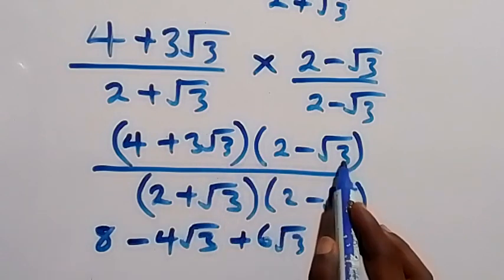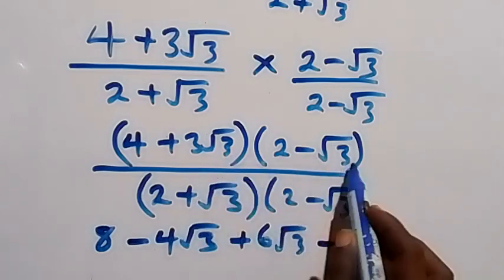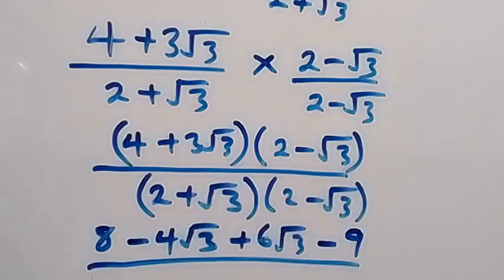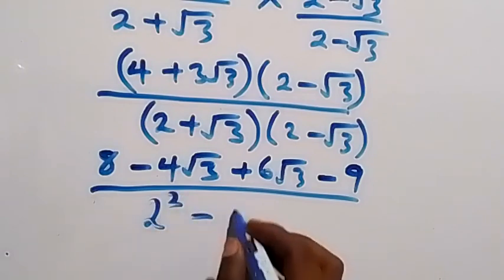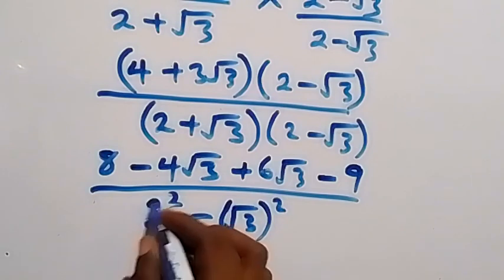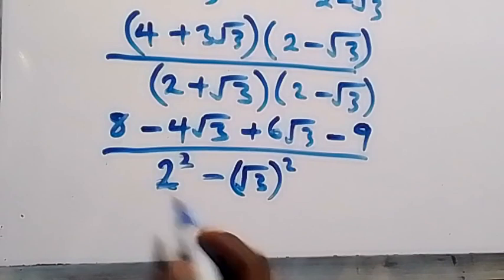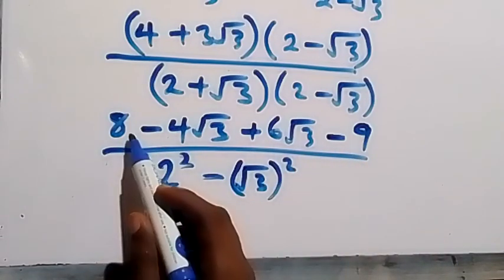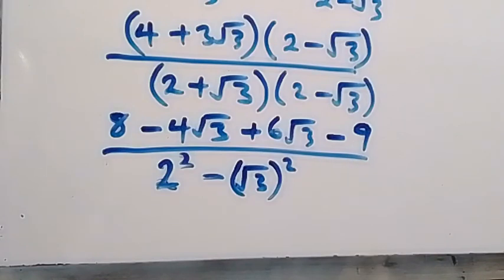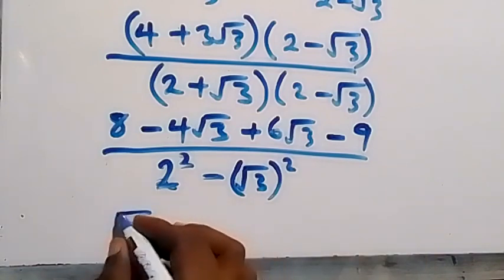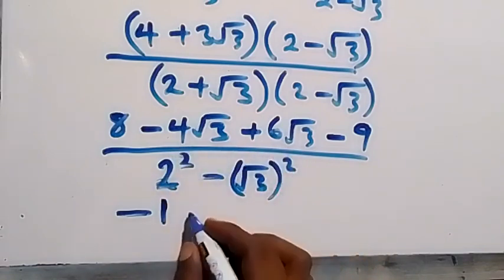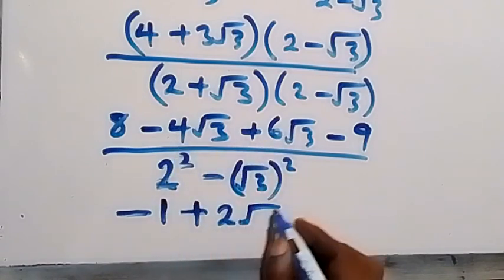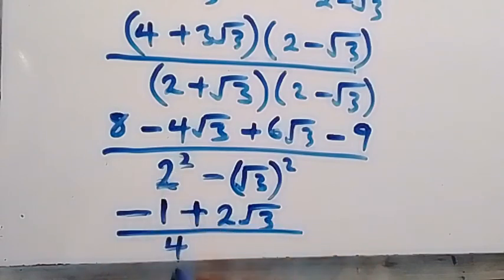Also, 3 root 3 times minus root 3 gives minus root 3 times root 3, which is minus 3. The denominator is in the form (a+b)(a-b): 2 squared minus (root 3) squared, which gives 4 minus 3 equals 1. In the numerator, combining like terms: 8 minus 3 gives 5, and minus 4 root 3 plus 6 root 3 gives plus 2 root 3. Wait — that gives us minus 1 plus 2 root 3 over 1.